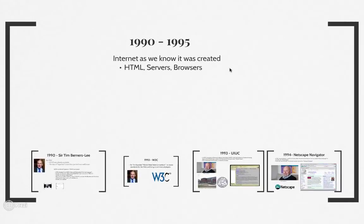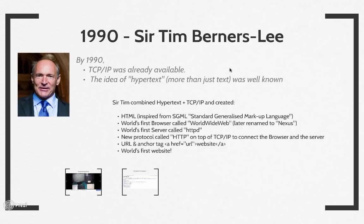It was not until 1990 that the internet as we know it was actually created. In 1990, Sir Tim Berners-Lee was working at CERN's lab, which is a European nuclear research facility. He knew about TCP/IP, and he also knew about the idea of hypertext, and he combined the two to create the internet as we know it.